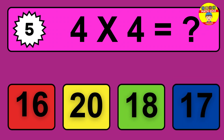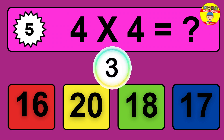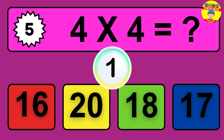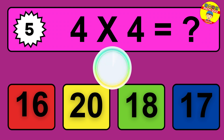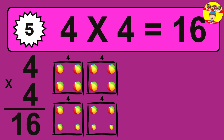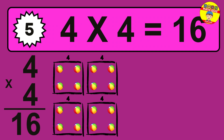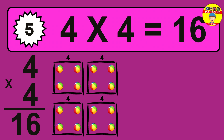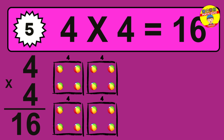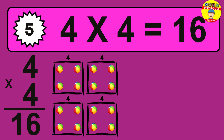Question 5. 4 times 4 equals what? The answer is 4 times 4 is 16. To calculate, we have 4 groups with 4 balls each one. So how many balls do we have? 16 balls.